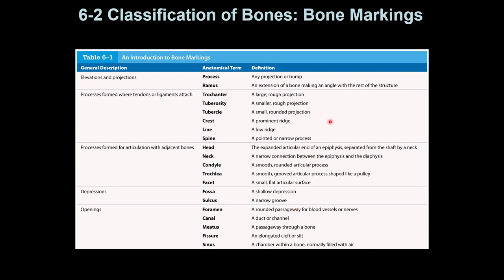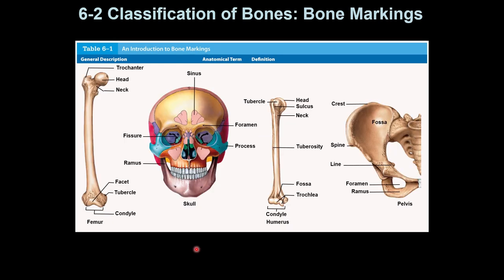Classification of bone based on bony markings — I may not test this in detail, but I highly recommend you study it. These terms are very important for chapters 7 and 8, and it is a good idea to know their meanings as it makes understanding the rest much easier. There is also an image supporting the previous slide — when you study, go back and forth and compare the words with the image. I will go through all of these in more detail when we get to chapters 7 and 8.